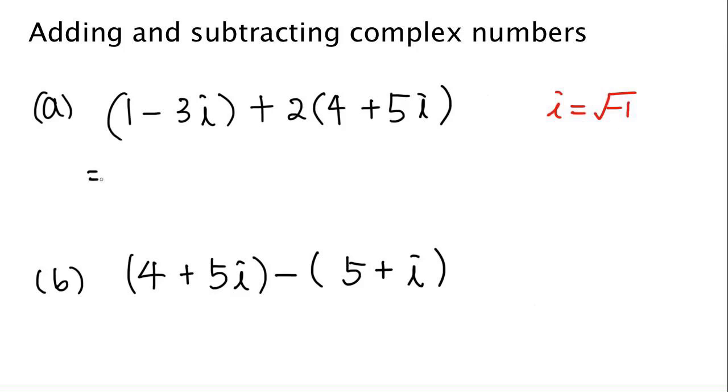So in this first example, we have 1-3i, and we are adding twice of 4 plus 5i. So we can distribute 2 times 4 and 2 times 5i. So 2 times 4 equals 8, and 2 times 5 is 10, so plus 10i.